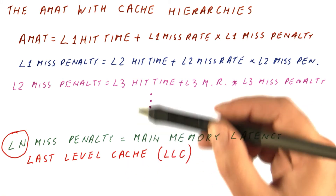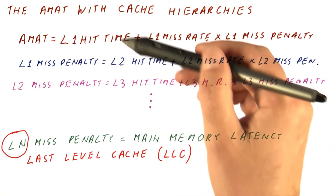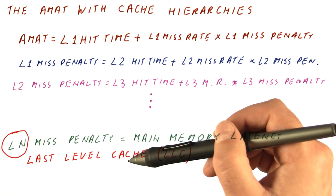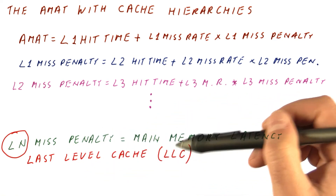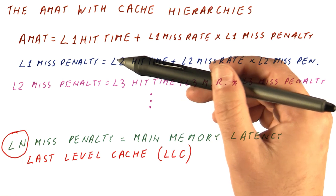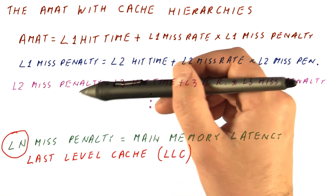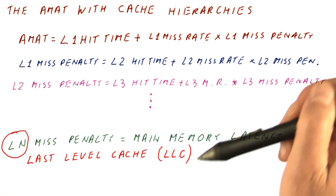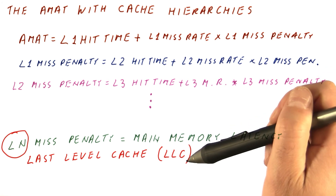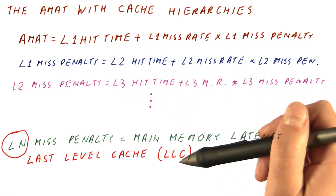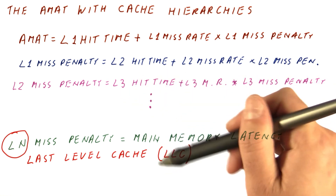It used to be that the L1 cache was the only cache, so L1 was the LLC. Then L2 caches were introduced, so the L2 miss penalty was the main memory latency because L2 went directly to memory — that was the last level cache. Then L3 caches were introduced, so they became the LLC, and so on.